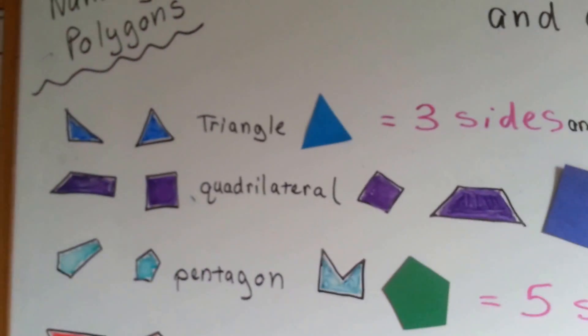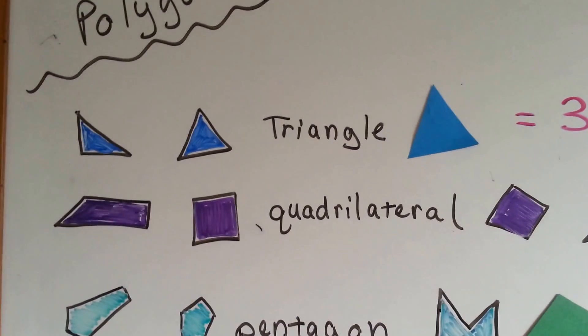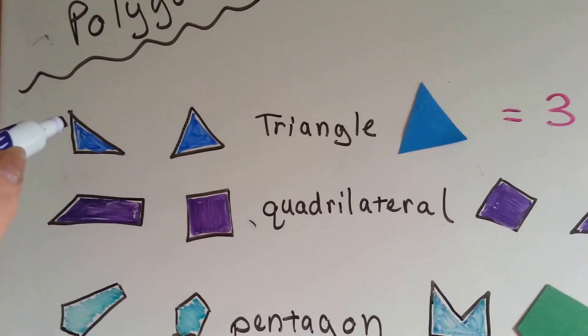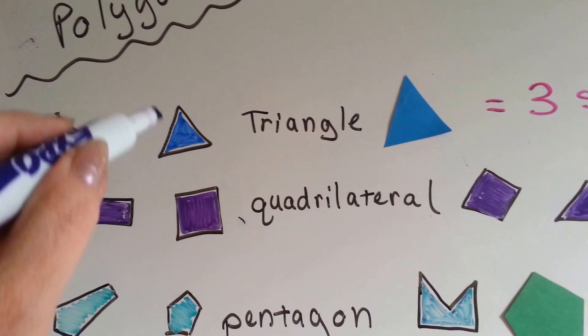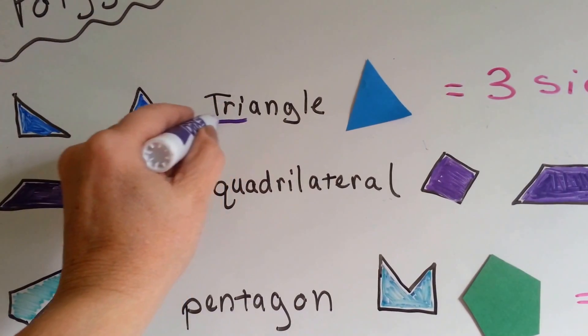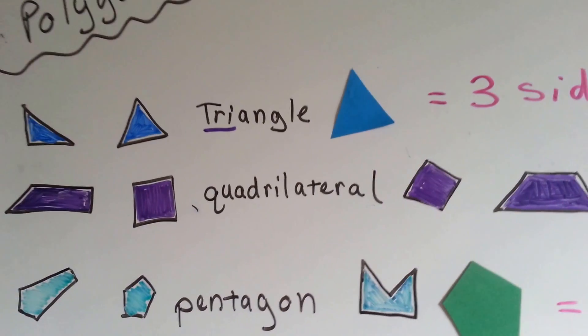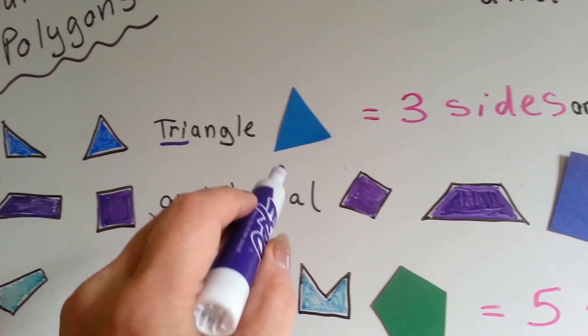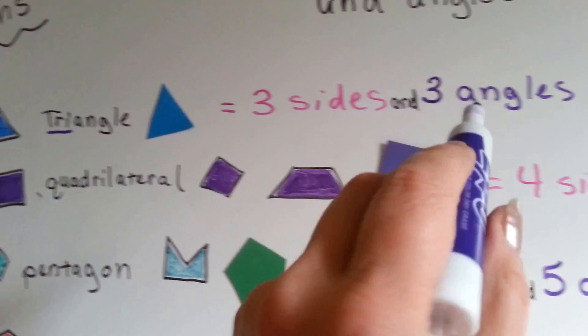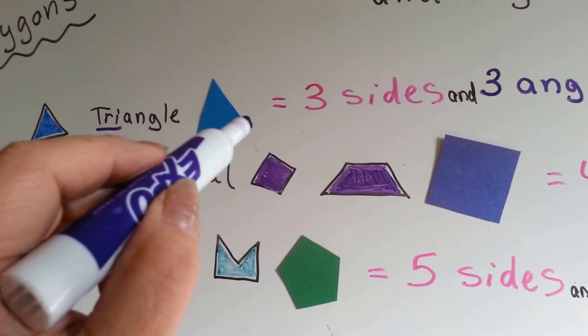So let's look at this triangle here. The triangle has three sides. One, two, three. One, two, three. In fact, the beginning of the word tri means three. So this triangle has three sides. It also has three angles. One, two, three.